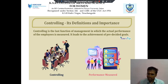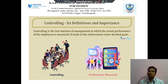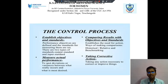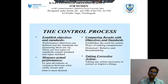Controlling leads to achieve the pre-decided goals — goals that have already been decided must be achieved. Next we discuss about the Control Process. There are four points available. The first one is Established Objectives and Standards.